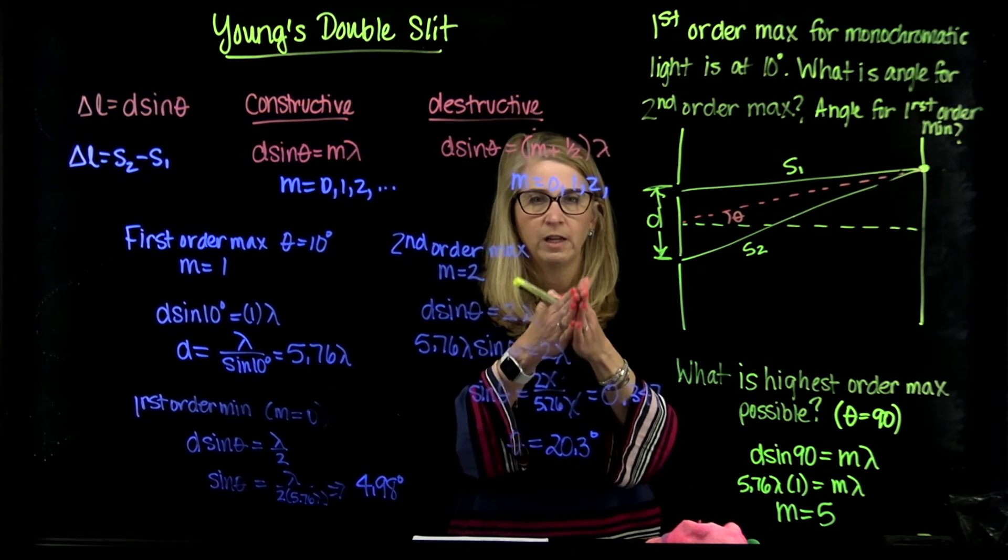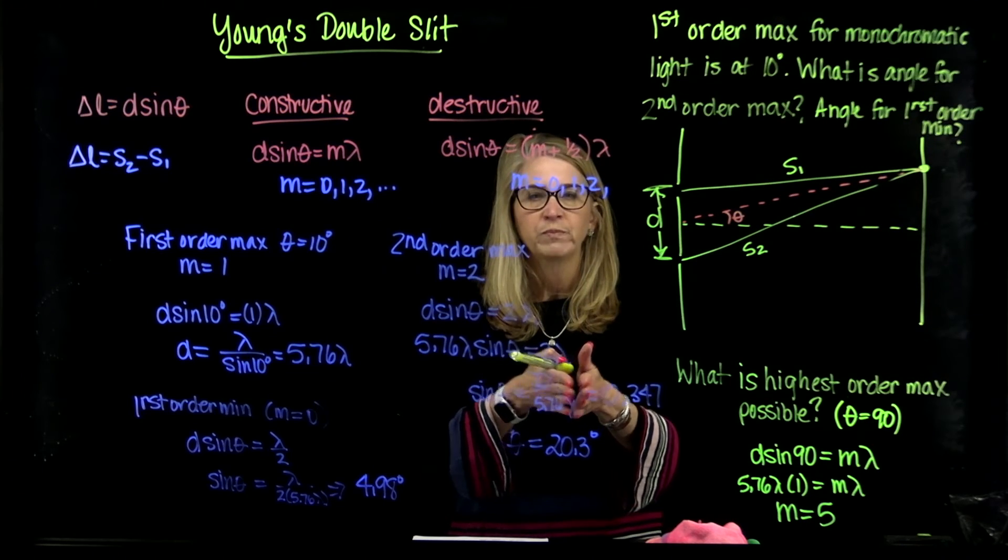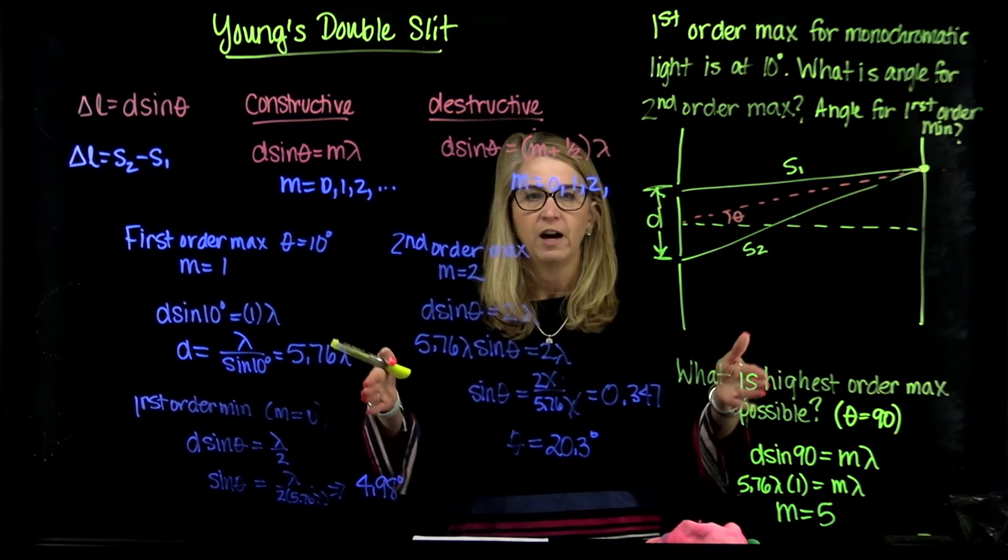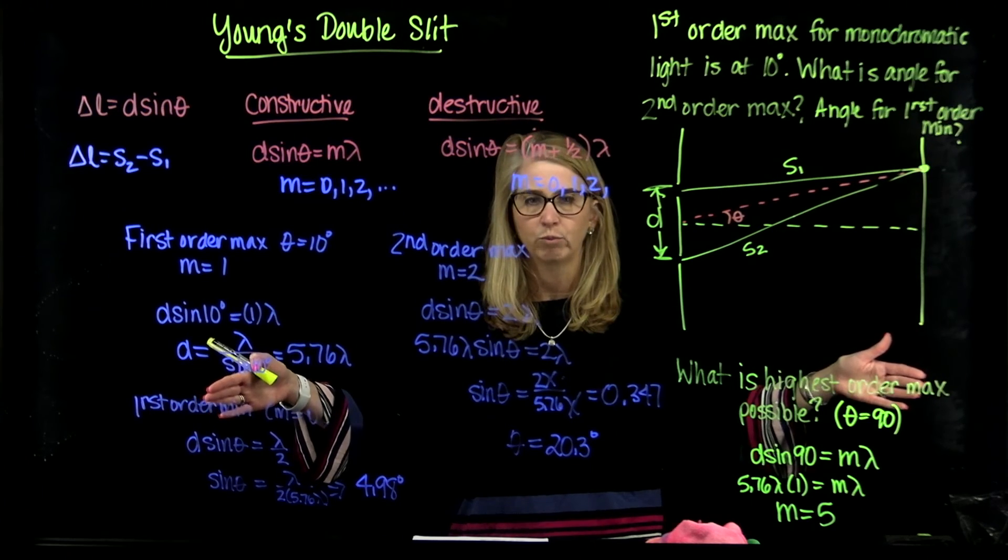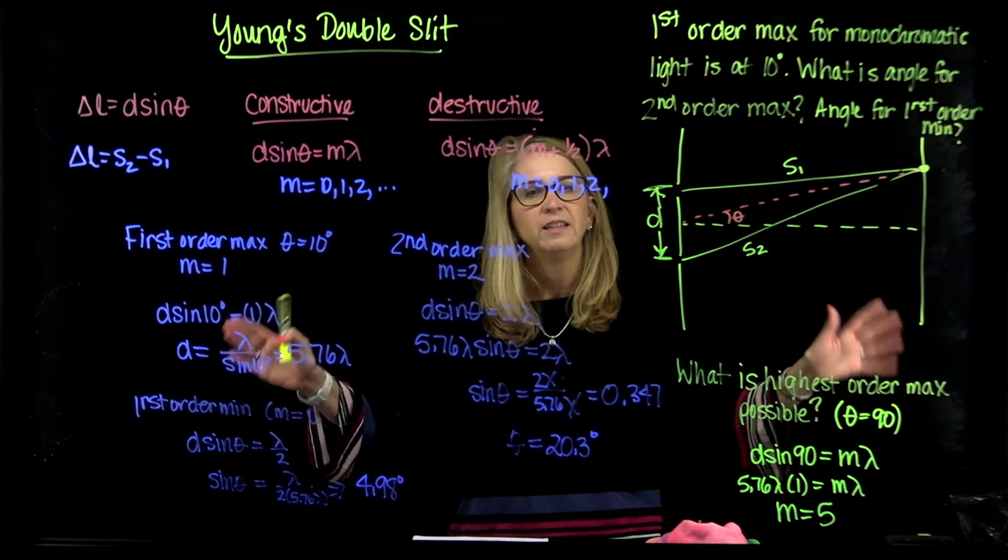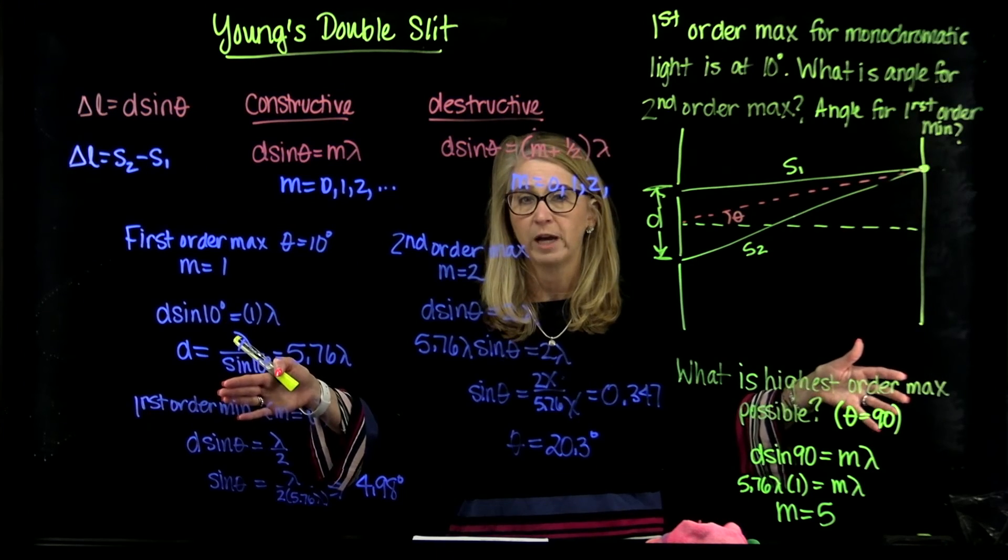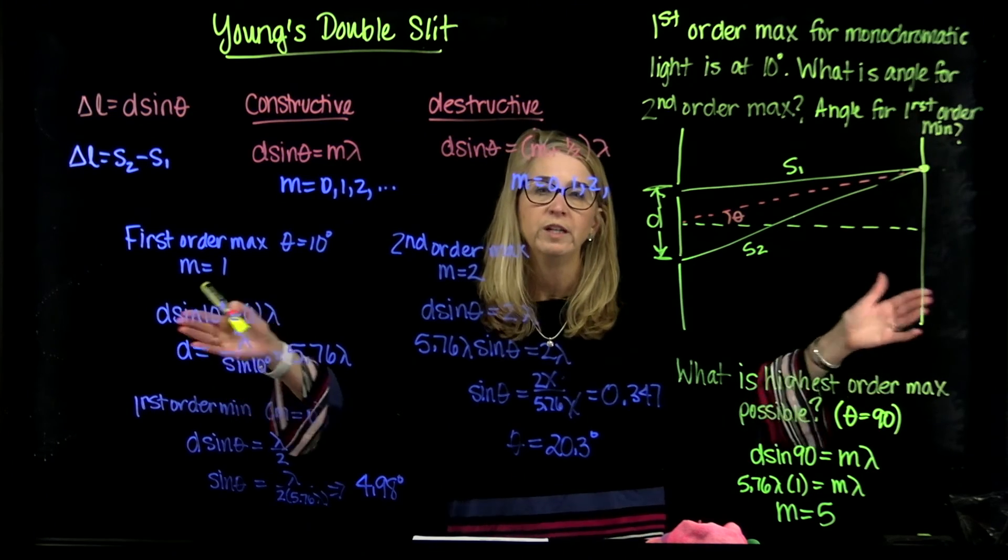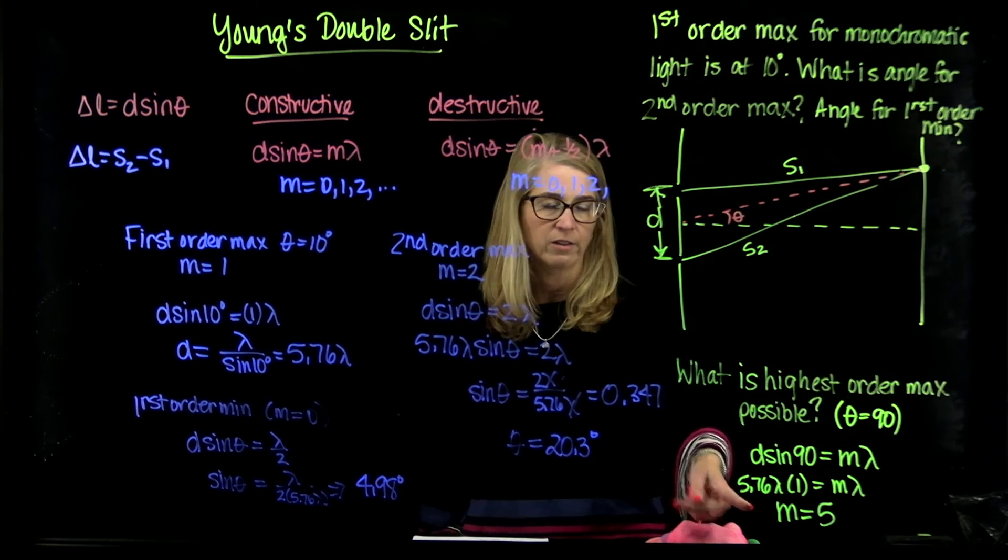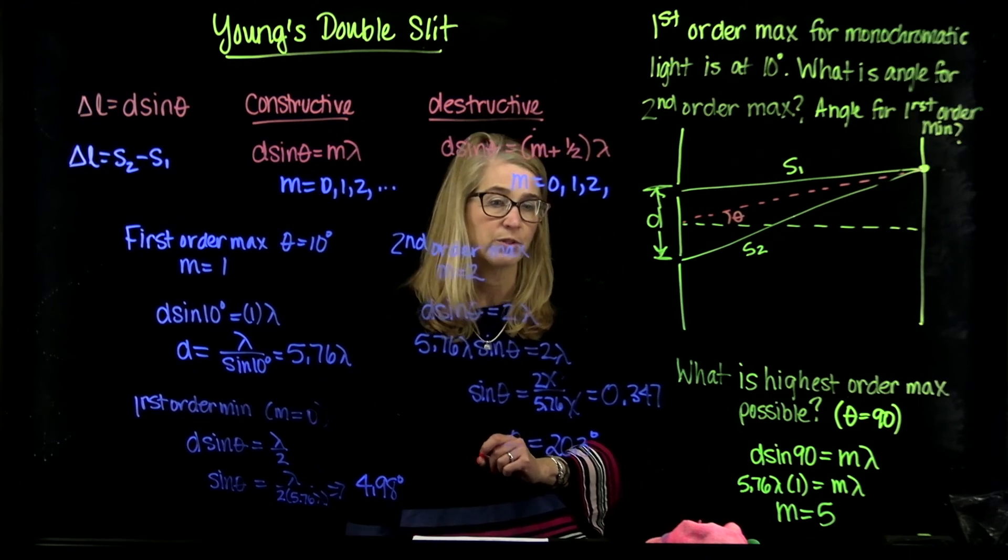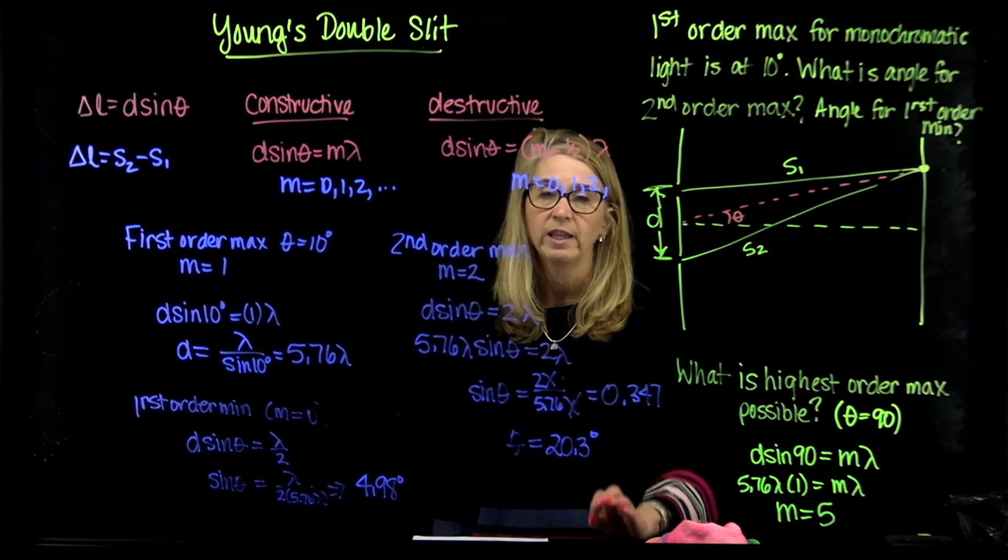And so that means we would have a bright spot in the middle, and then we would have 5 pairs on either side of that central bright spot. And that would be the end of the interference pattern that we would see. We would never be able to have the 6th one because we found that the largest one we could have was the 5th. So hopefully that helps.